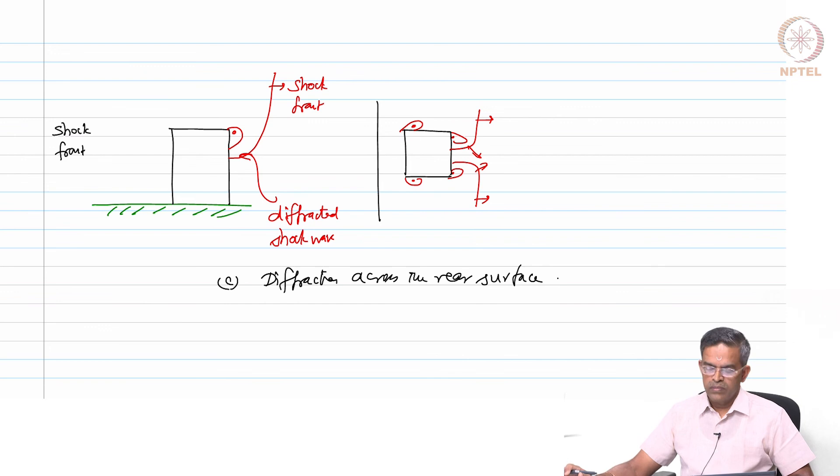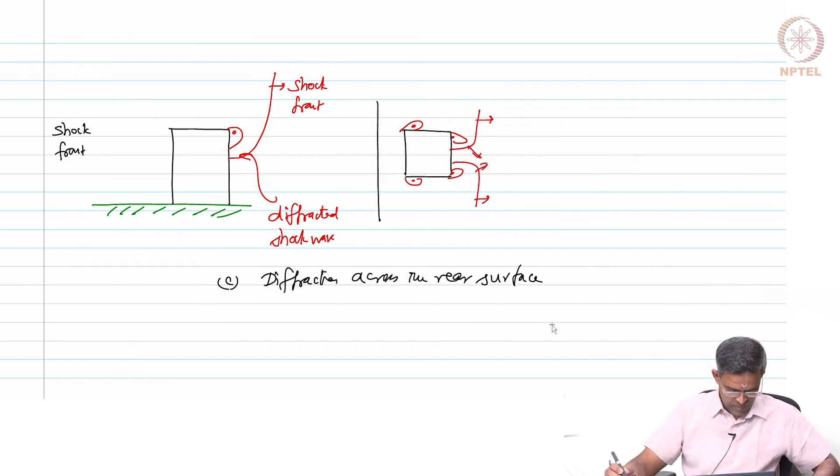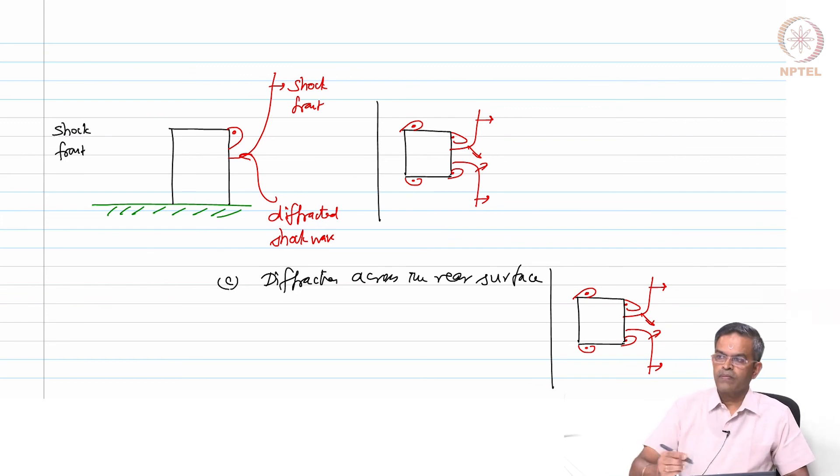Now once the shock wave moves further, the diffraction is complete. I will just copy this figure and put it here. The diffraction is complete. I should say this figure indicates a complete diffraction. So the whole set of figures ABCD indicates shock wave propagating over the structure.